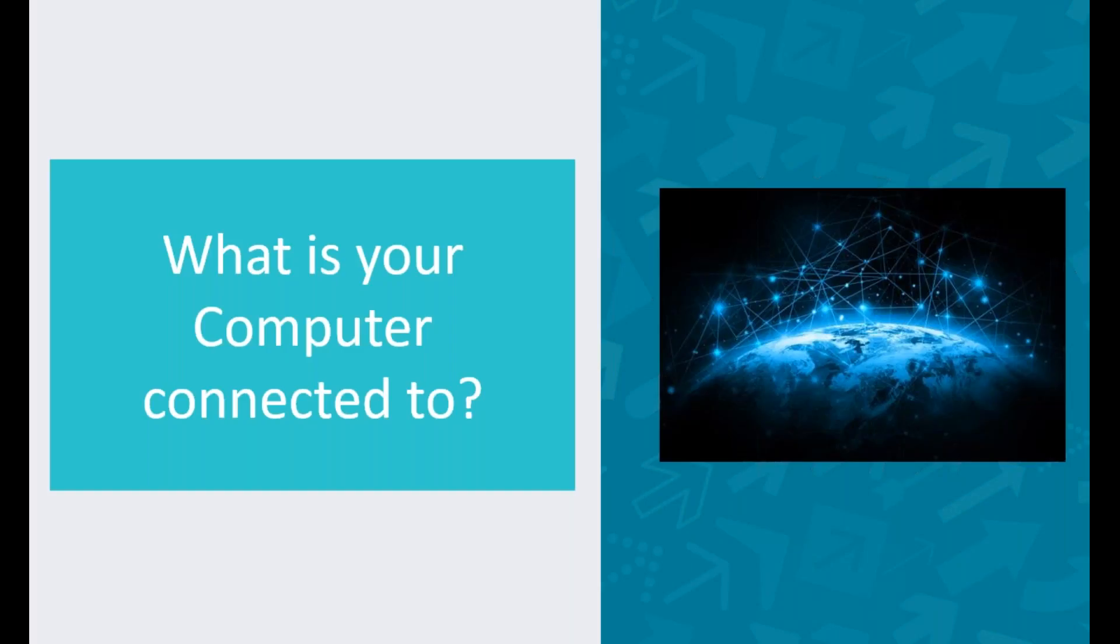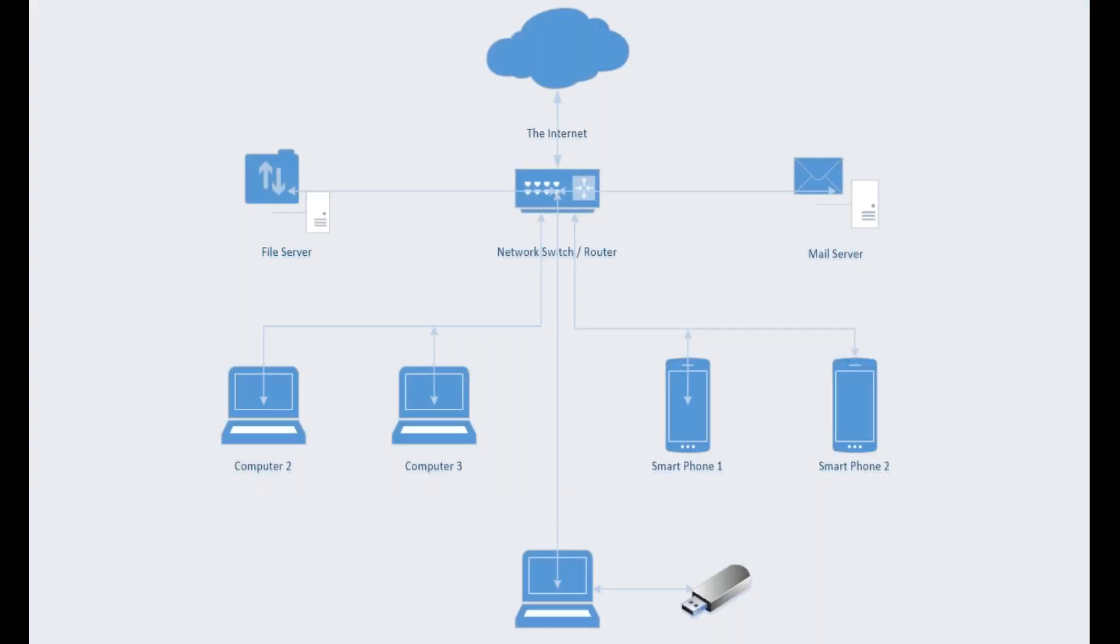So, what is your computer connected to? Many users who boot up their computer every day and start working don't realize exactly how they connect to the internet and who else is connected to their network. In this section we will run through what a network looks like which will help later in the session to understand your network's points of weakness. This diagram illustrates what a typical company network looks like. This may seem to be a complex diagram but it's actually quite simple if we break it down into three sections. So, let's do that now.